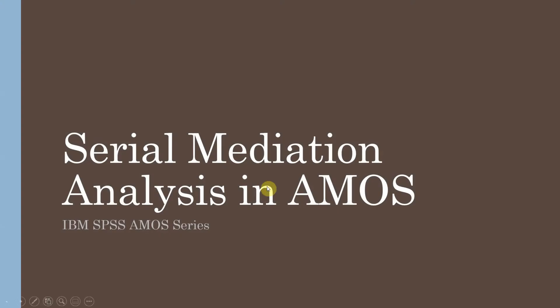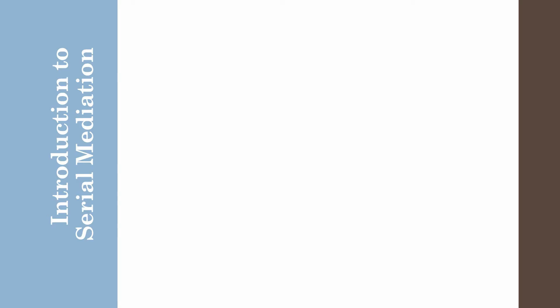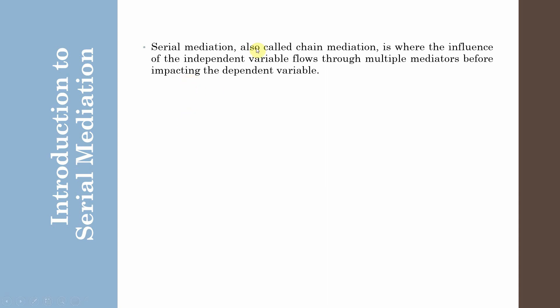Serial Mediation Analysis in AMOS — IBM SPSS AMOS Series: Introduction to Serial Mediation. Serial mediation, also called chain mediation, is where the influence of an independent variable flows through multiple mediators before impacting the dependent variable. You have a chain of relationships whereby the effect starts flowing from one variable, goes on to the next, then on to the next, before impacting the ultimate dependent variable.